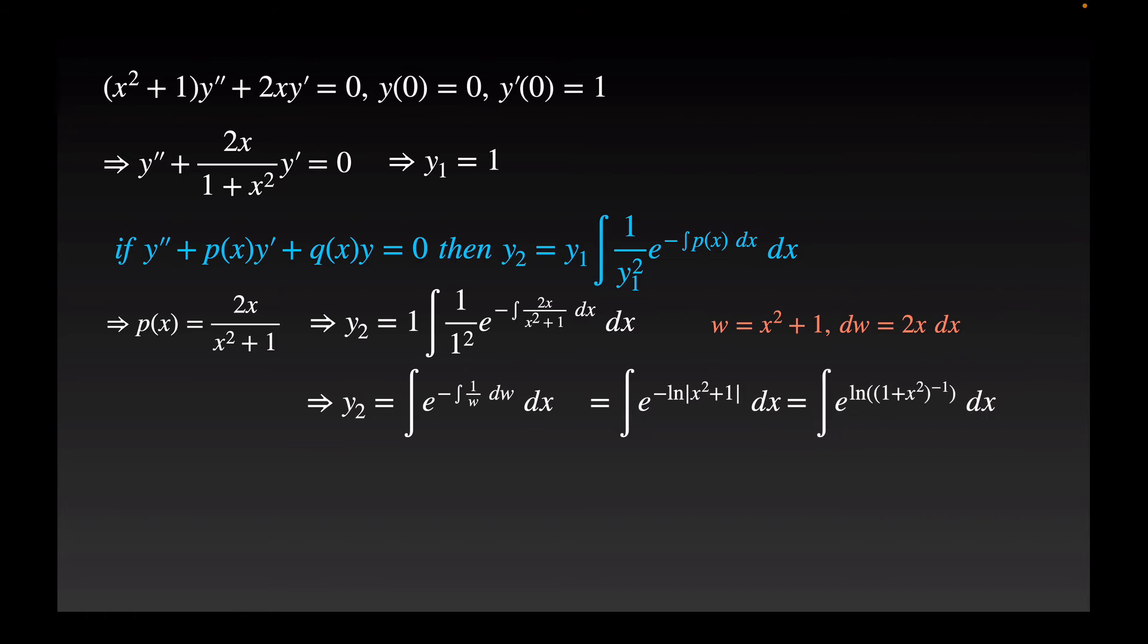Now just use a logarithmic rule to rewrite that negative outside the natural log as the exponent of the x squared plus 1. I don't really need the absolute value because x squared plus 1 is never going to be negative, at least for real numbers. Now I can use the fact that the exponential and logarithmic functions are inverse functions to rewrite this as 1 over 1 plus x squared, since that negative 1 exponent just puts a reciprocal on the 1 plus x squared.